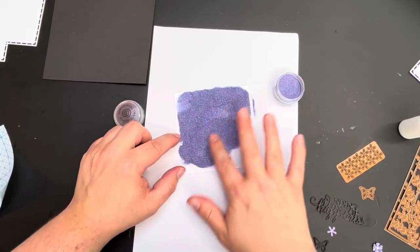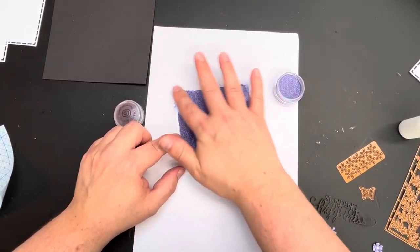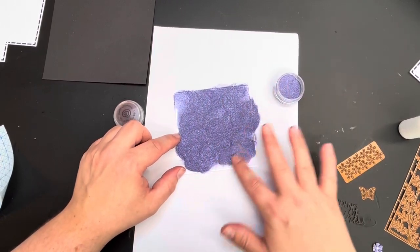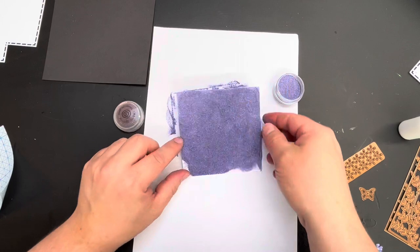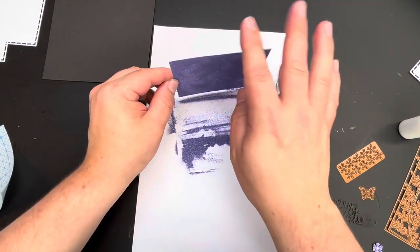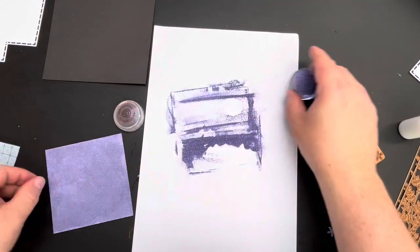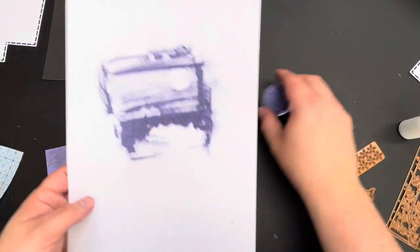I'm now using some polished silk glitter from Cosmic Shimmer over the top of it. This is our lilac color. Now these glitters are incredible because they are so ultra fine that once we have placed them over the card they're so delicate we can actually stamp on top of them.